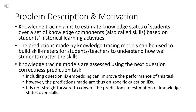The predictions made by knowledge tracing models can be used to build skill meters for students and teachers to understand how well students master the skills. The ground truth knowledge states of students at different time points are usually unknown. Knowledge tracing models are often assessed using the next question correctness prediction task. Including question ID embeddings into knowledge tracing models can improve the performance of this task greatly. However, the predictions made are thus on specific question IDs.